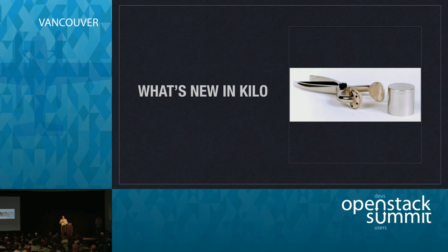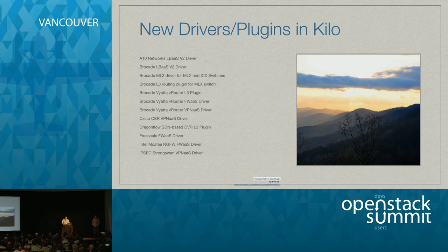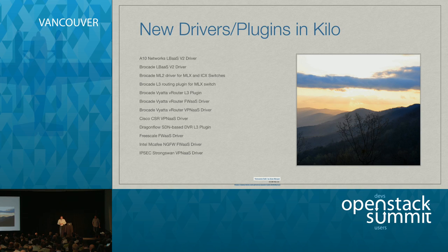We just released Kilo. As we iterated, there are a lot of plugins and drivers that can back Neutron beyond the default reference implementation. We pushed over 50 plugins and drivers in Kilo — both vendor-based and open-source-based. A lot of these were services plugins, whether it's VPN, LBaaS, or Firewall. We're adding a lot of advanced service plugins now because a lot of people have already implemented L2 and L3, and vendors or open-source projects with those capabilities are integrating into Neutron.